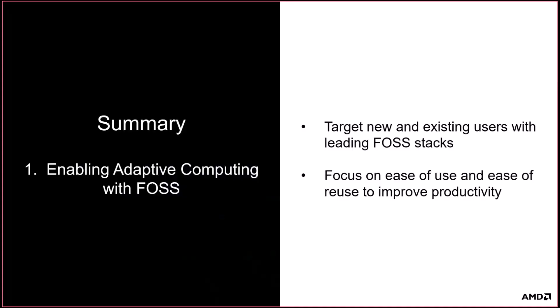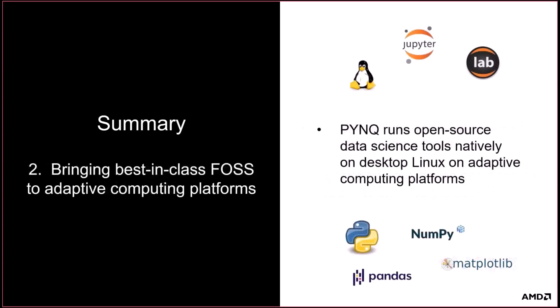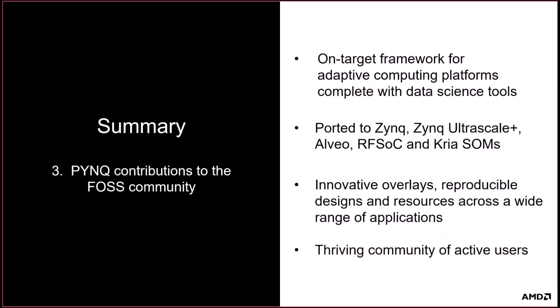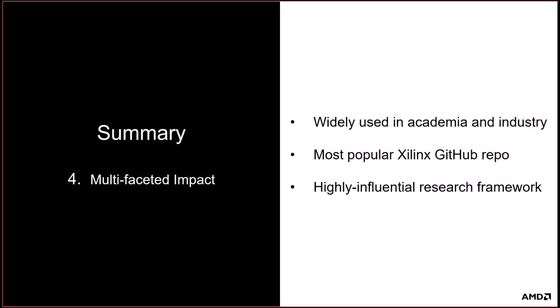In summary, PINK has been very successful in targeting new users. By focusing on ease of use and ease of reuse, we have broken through many of the barriers to adoption. Our strategy of adopting leading FOSS stacks for data science has proven successful. Customers tell us that they really like getting open-source solutions that they can immediately use. PINK has contributed significantly to the FOSS community by extending traditional productivity frameworks with support for adaptive computing. Projects like the composable overlay demonstrate how hardware can be abstracted so that it can be used by domain experts with no embedded programming or hardware design skills. At the same time, existing users have developed new frameworks based on PINK and have ported it to new boards. PINK proves that FOSS works for exploring new ideas, for rapidly disseminating results, and for building global communities of enthusiastic users.